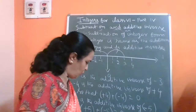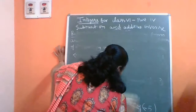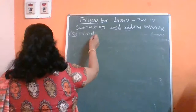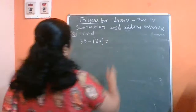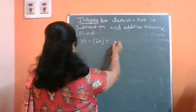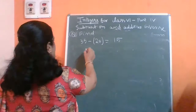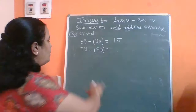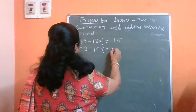Now from the textbook, the first question is: find 35 minus 20. The answer is 15. The second question is 72 minus 90 — here 90 is having a minus sign and 72 is having a plus sign, therefore the answer is minus 18.